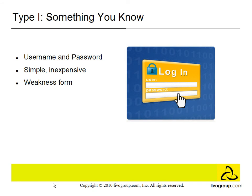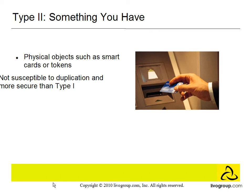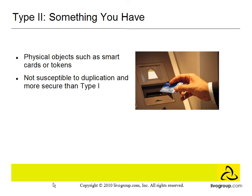Type 2 is something you have. These are based on physical objects such as smart cards or tokens. These assume that only the owner of the account has the necessary smart card or token needed to unlock the account. They are not susceptible to duplication and are more secure than Type 1s, though they are more expensive than Type 1 authenticators.